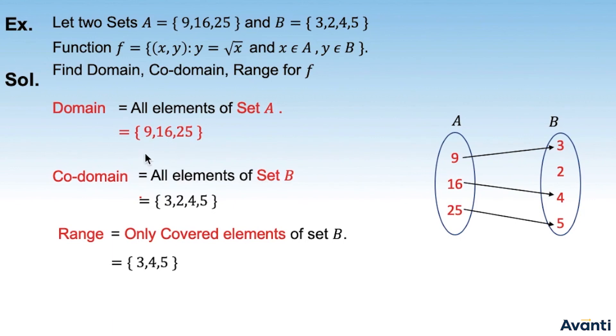Co-domain, all elements of set B = {3, 2, 4, 5}. Range, only covered elements of set B. Wahi elements set B ke joh kisii element ki image hai. Johki hai {3, 4, 5}.